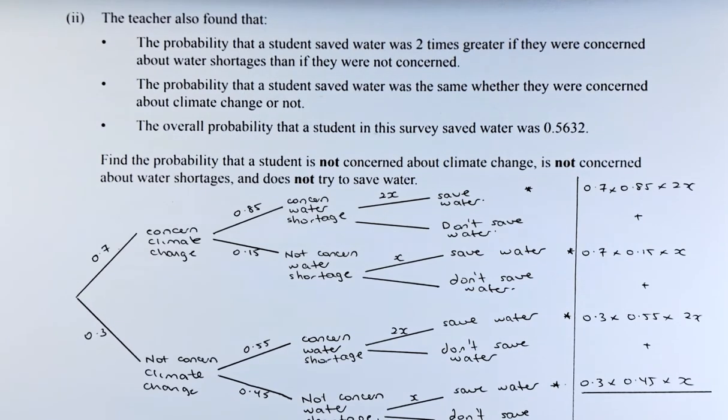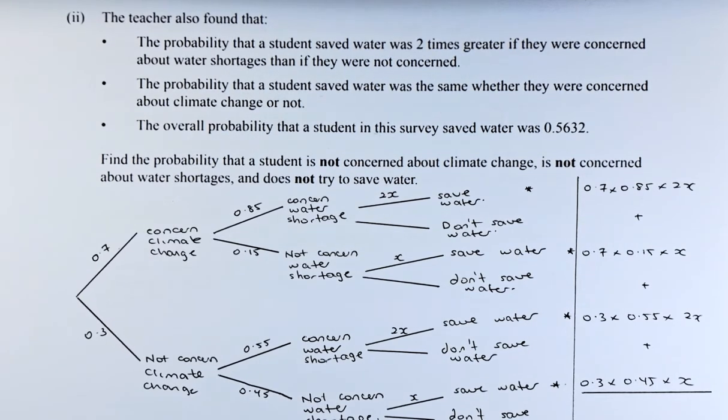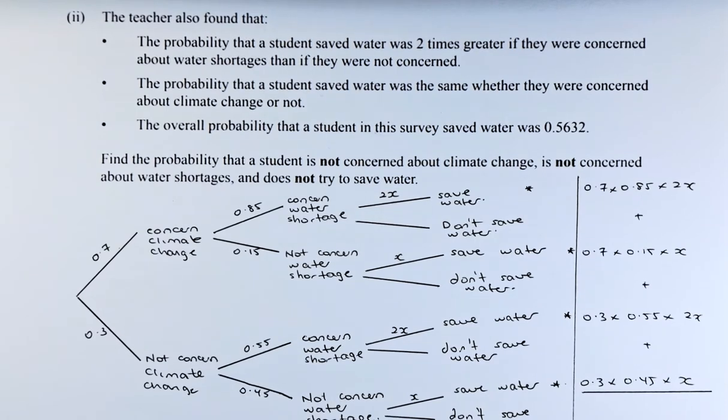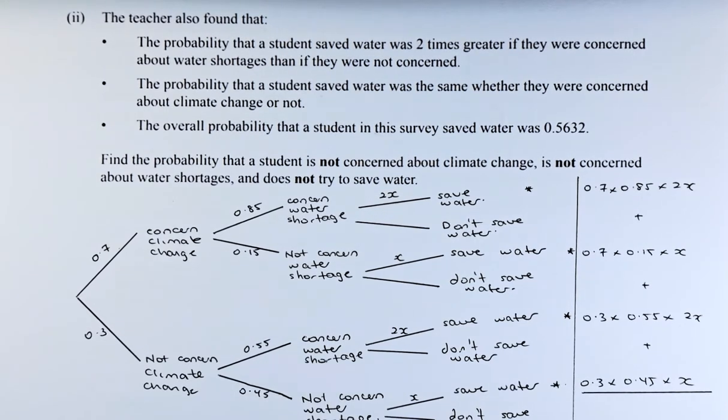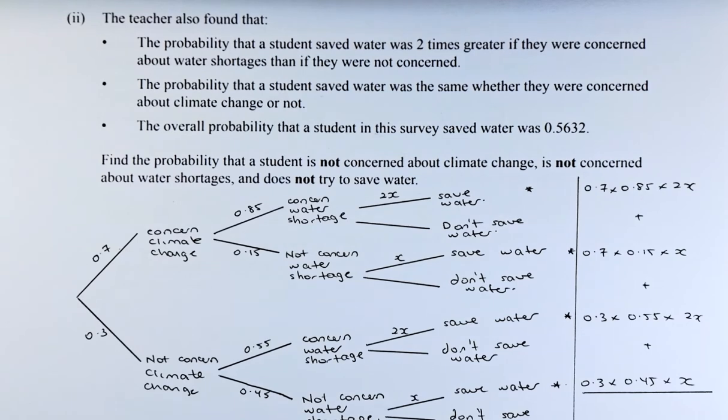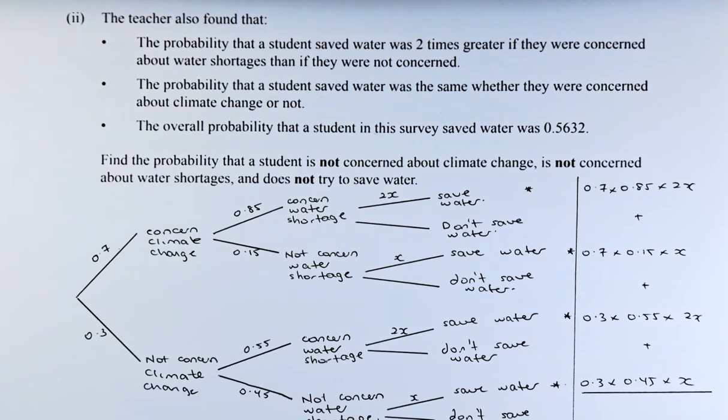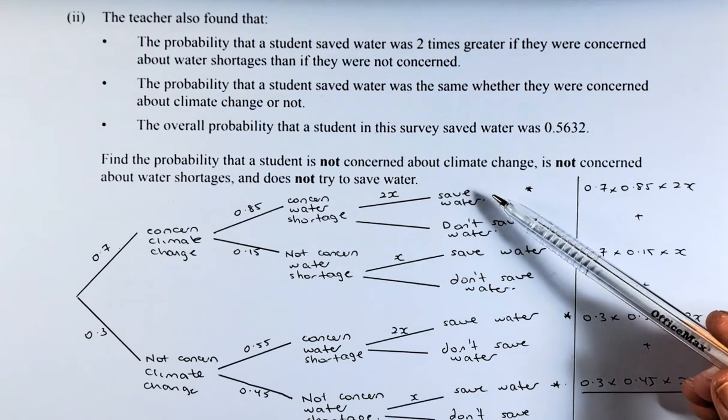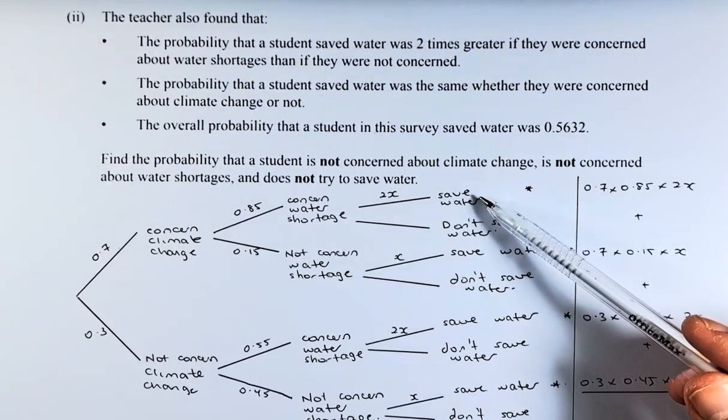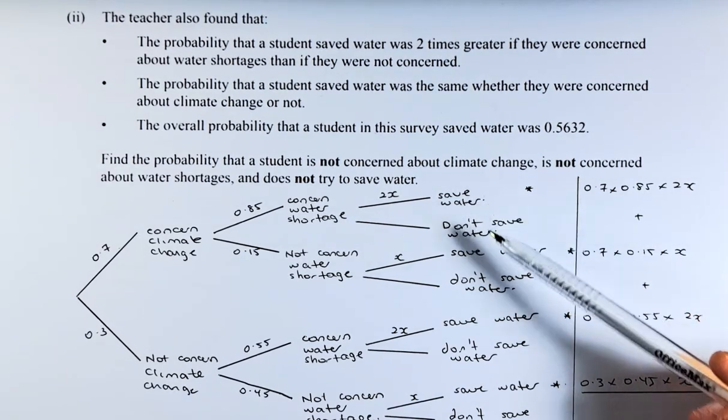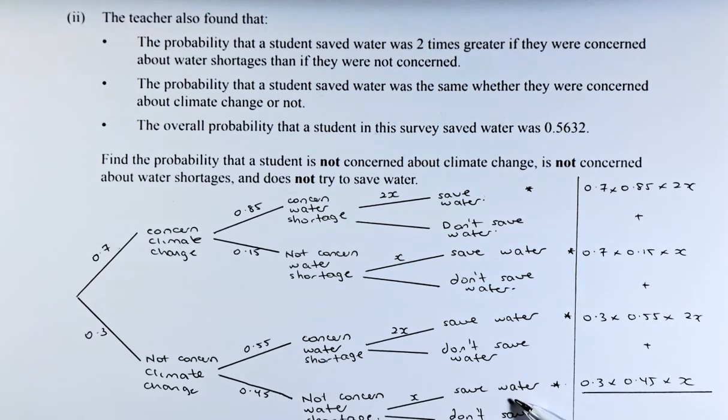The probability that the student saved water was the same whether they are concerned about climate change or not. The overall probability that the student in this survey saved water was 0.5632. So there are 4 possibilities that they saved water. Here, here, here and here.